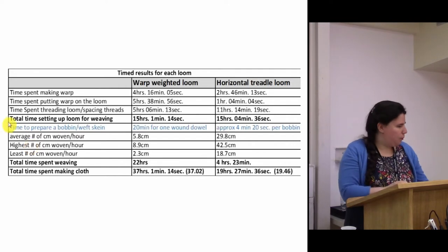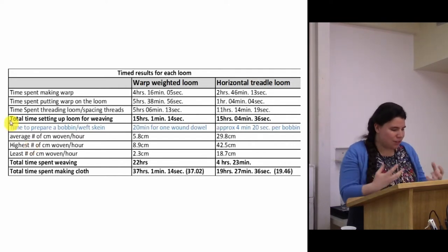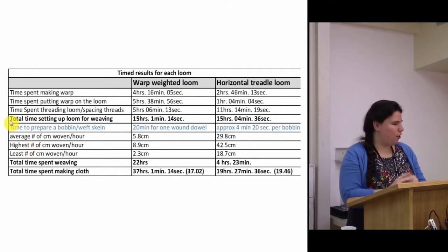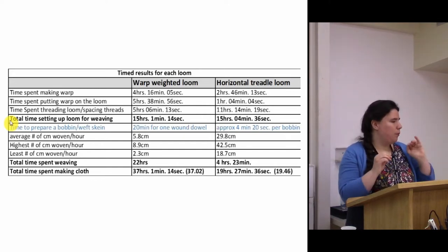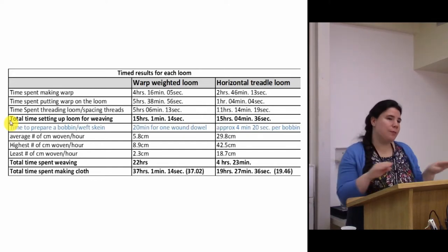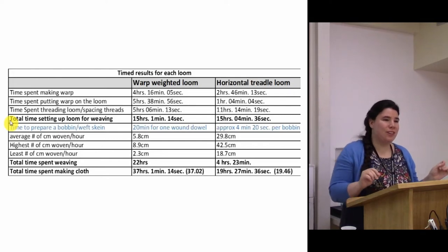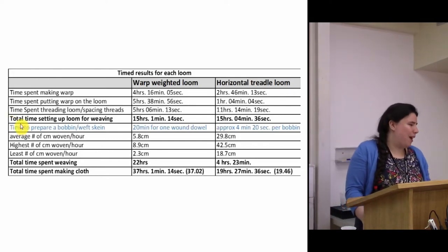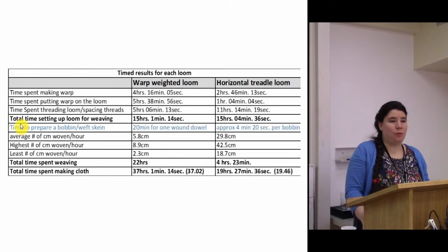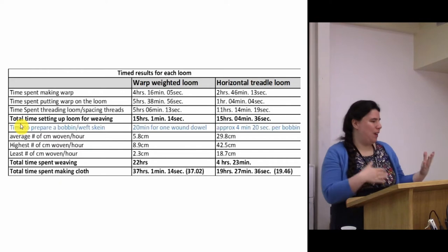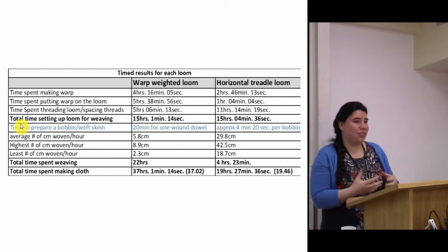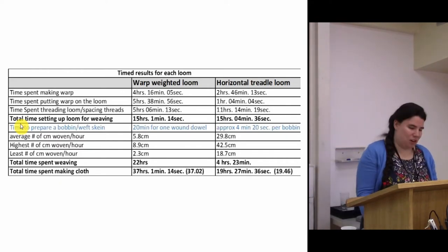The interesting thing that came out of this that's contrary to this assumption of efficiency is that the horizontal treadle loom wasn't more efficient in every aspect of production. The setup time for the two types of looms was pretty much identical at about 15 hours. The horizontal treadle loom actually took about twice as long to thread compared to the warp-weighted loom. So you get cases where it is certainly not more efficient.